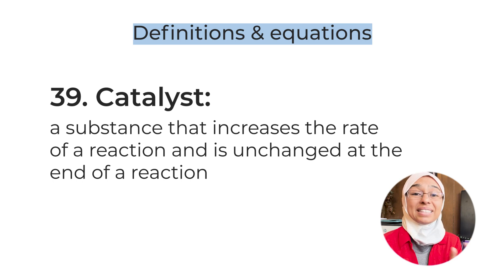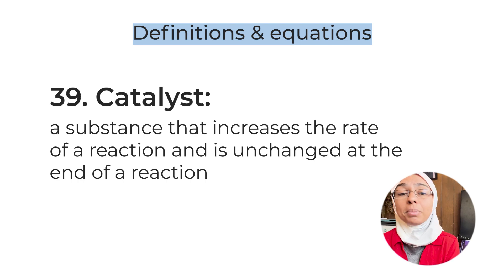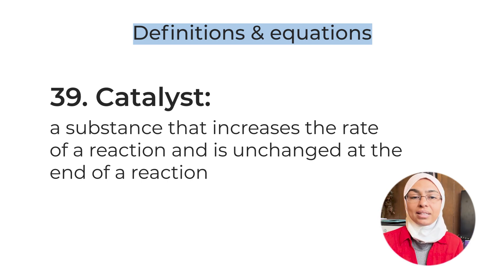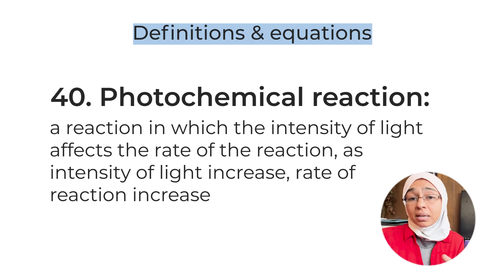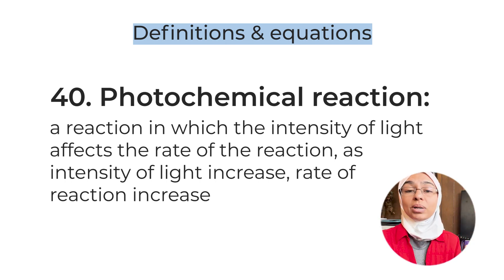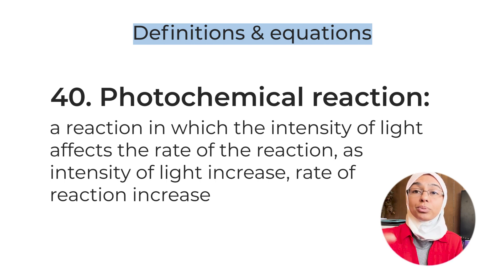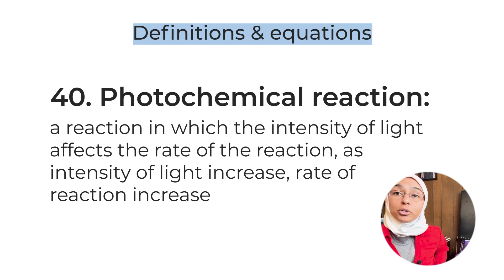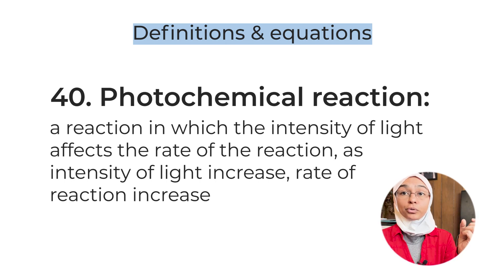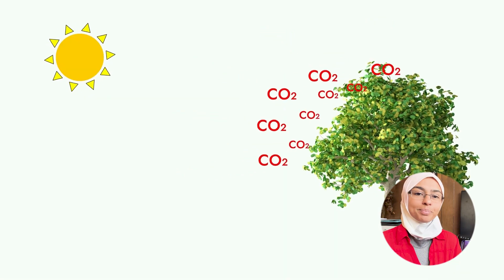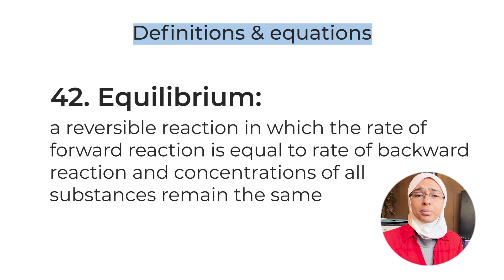Definition number forty: photochemical reaction — uncommon in the new syllabus, but it is a reaction in which the intensity of light affects the rate of reaction. The higher the intensity of light, the higher the rate of reaction. An example in organic chemistry is the substitution reaction, which requires light and does not happen in the dark. Another example is photosynthesis. Definition number forty-two: equilibrium — a reversible reaction in which the rate of the forward reaction equals the rate of the backward reaction, and the concentration of all substances remains constant.